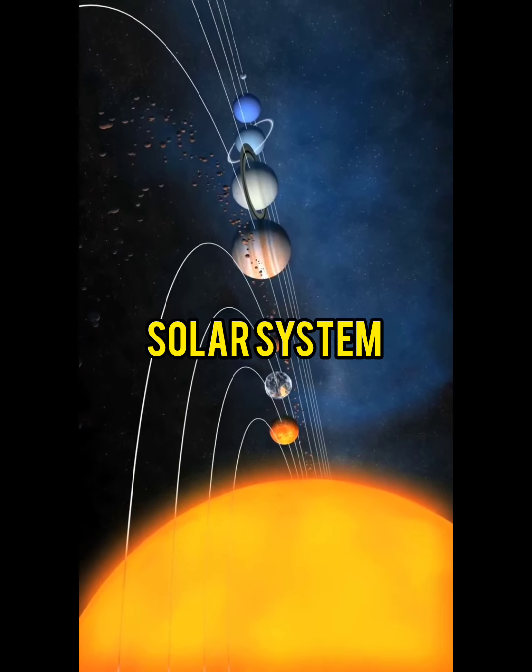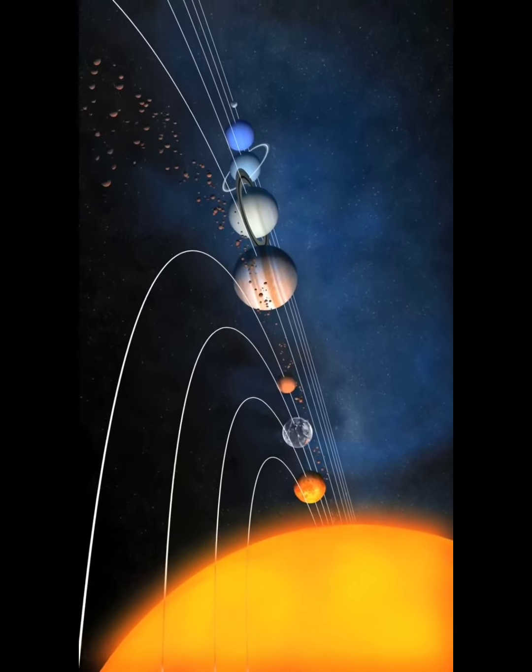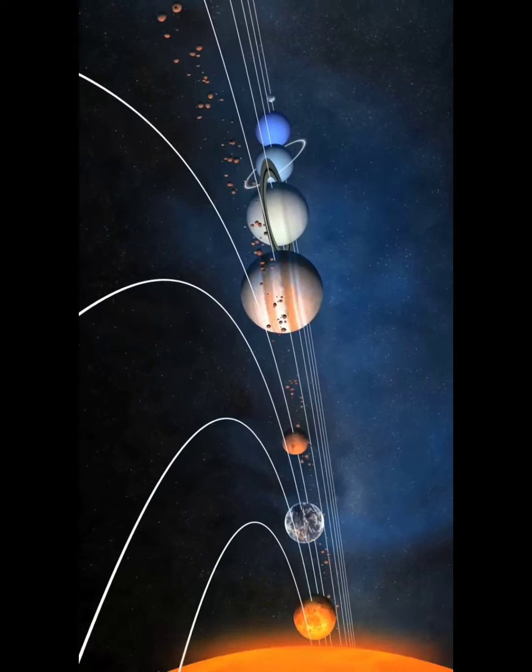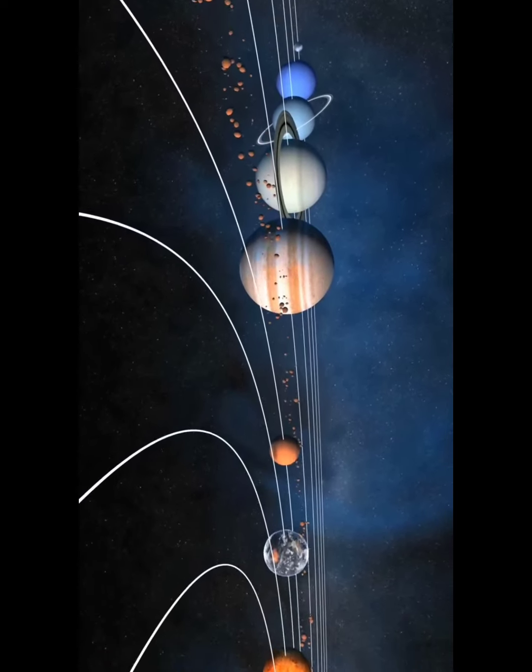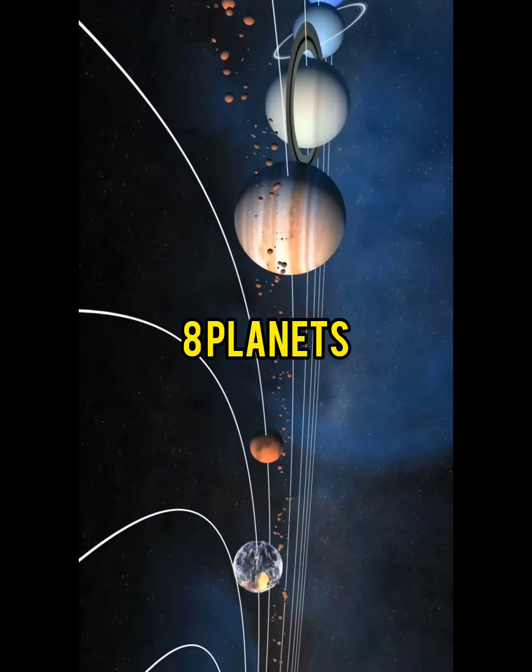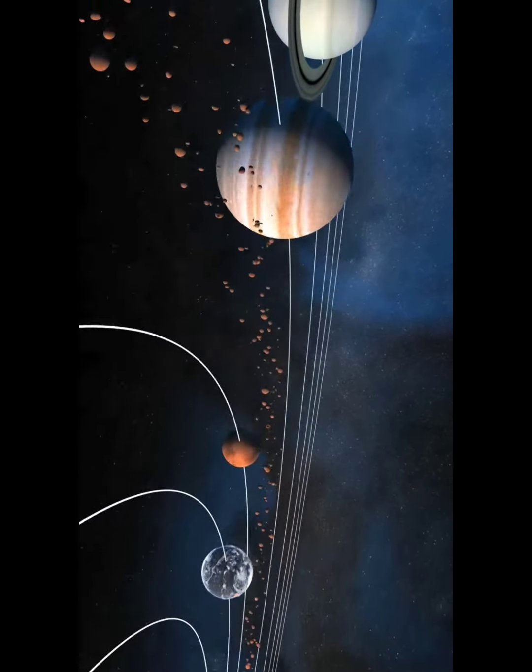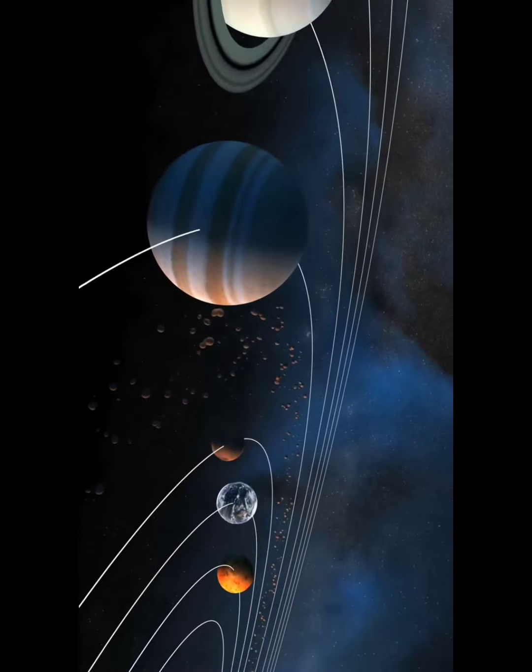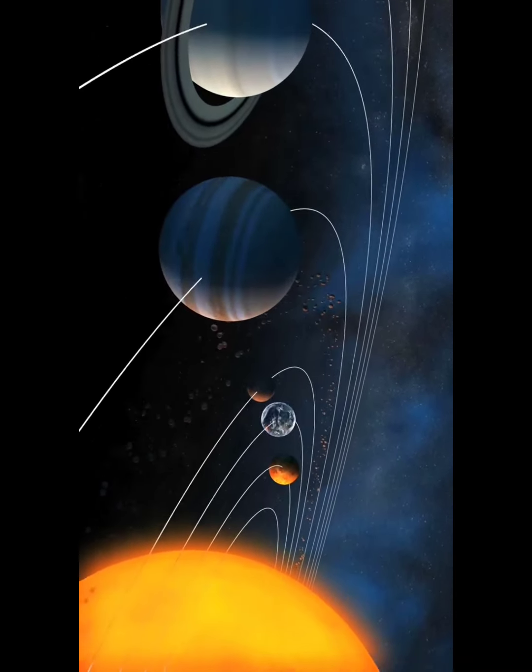The solar system consists of the sun and everything that orbits or travels around the sun. This includes the eight planets and their moons, dwarf planets, countless asteroids, comets, and other small icy objects.